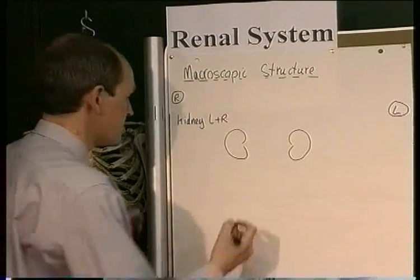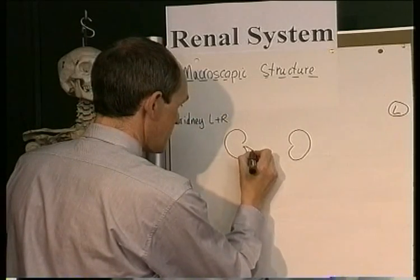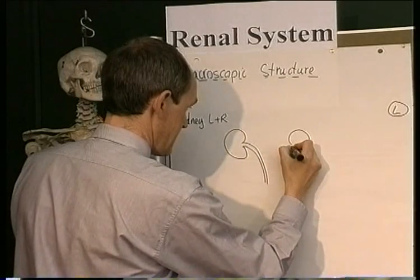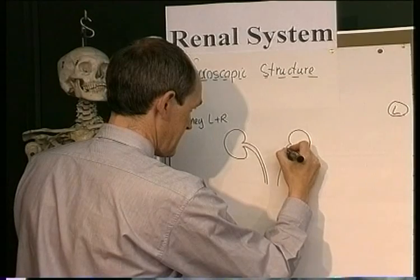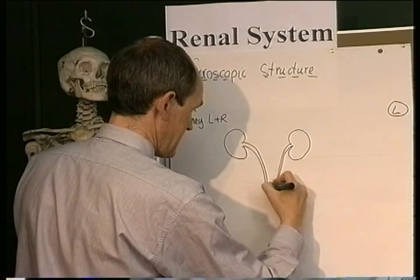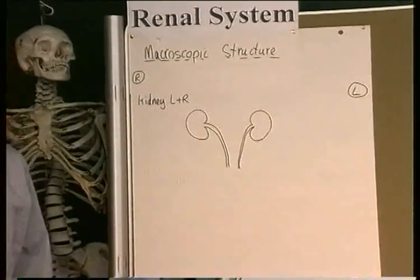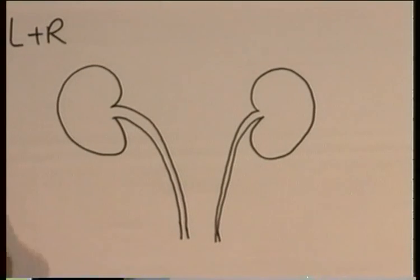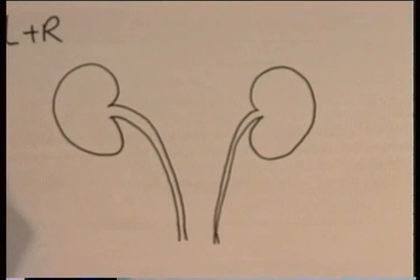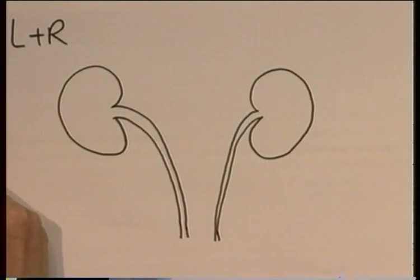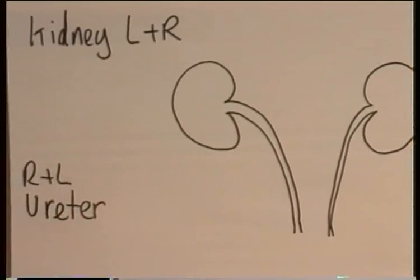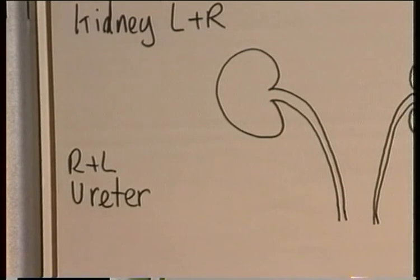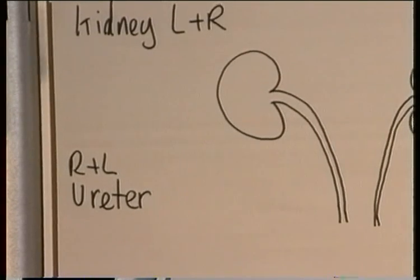Leaving each kidney, there's a tube that carries urine down towards the bladder. These tubes are called the ureters — there's the right and the left ureter leaving their respective kidney.